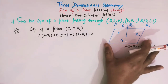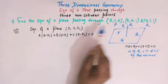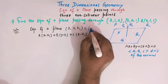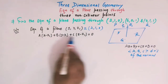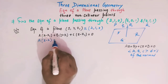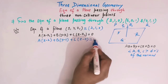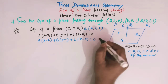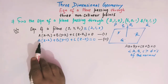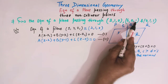We take (x1, y1, z1) as (2, 1, 0) and substitute it, giving us: a(x − 2) + b(y − 1) + c(z − 0) = 0. Let us denote this as equation (2). This equation also passes through the point (5, 0, 1), so we substitute x = 5, y = 0, z = 1.